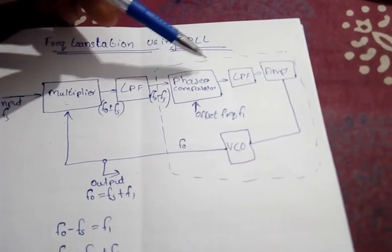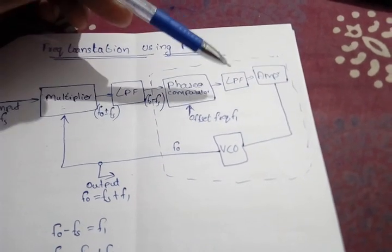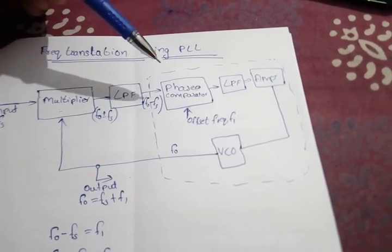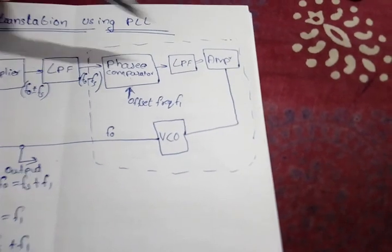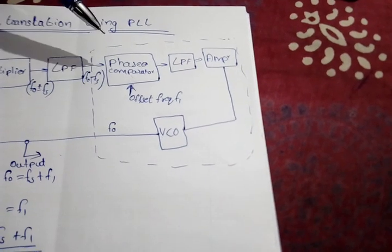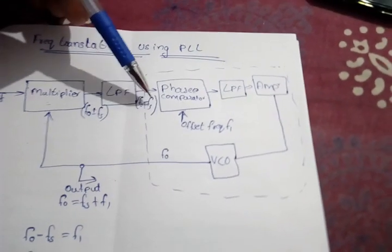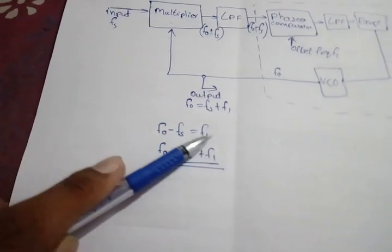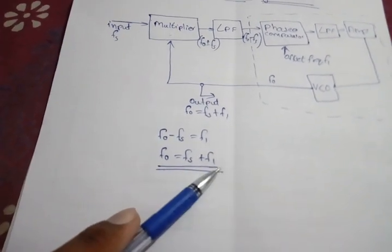After that, the Phase Lock Loop cycle starts. After the lock has occurred, F0 minus FS will be equal to F1. That is, F0 minus FS equals F1, therefore F0 is equal to FS plus F1.